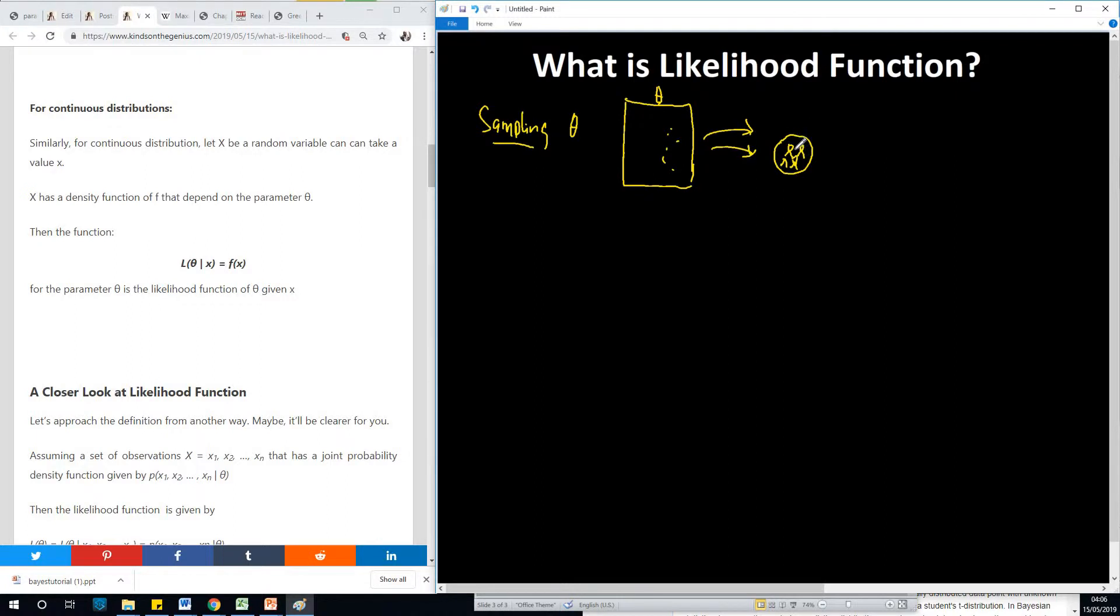Now the likelihood function is simply a function that helps you estimate this parameter using the sample. So how does it work? So let's say this sample you have taken is x and x has values, the height of these people are given by x1, x2, x3 all the way to xn.